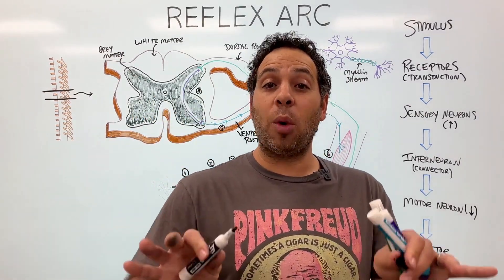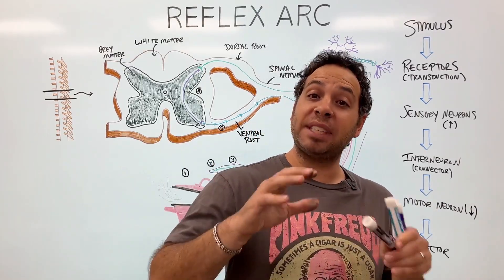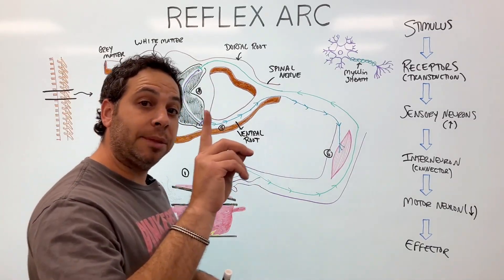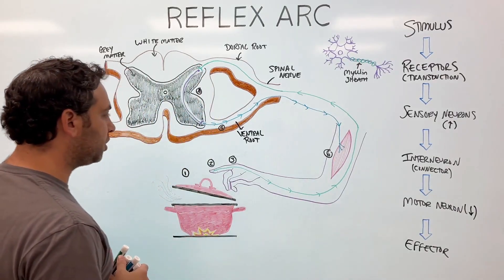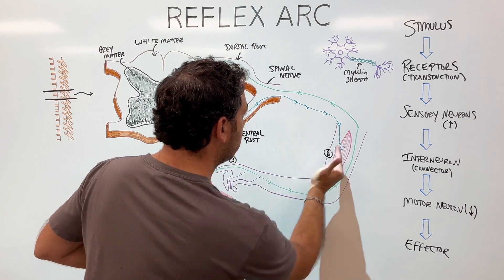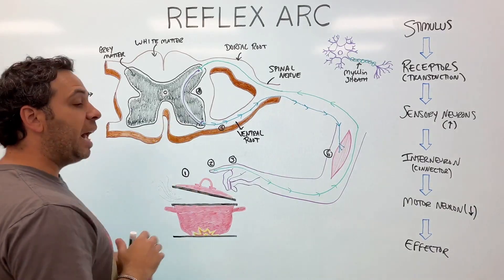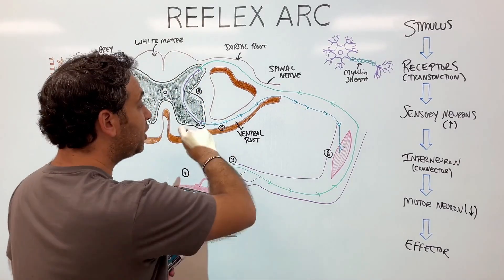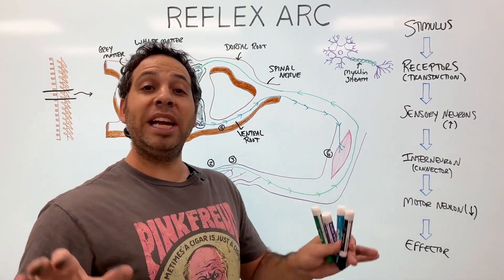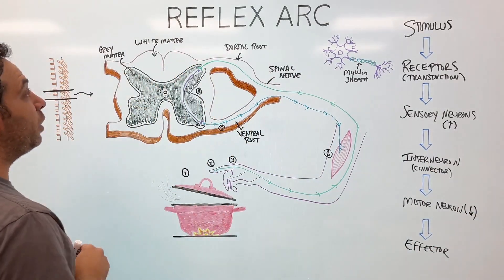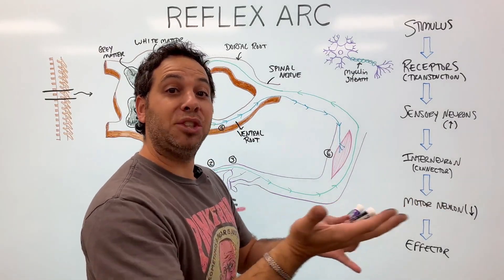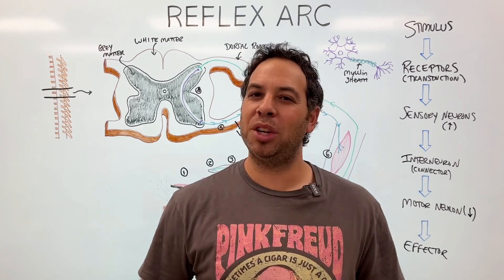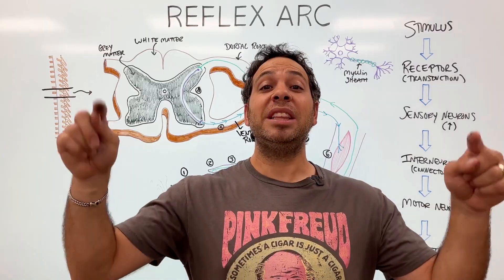Here's the cool part — your brain does not even know what happened until after your hand moved, because we didn't have enough time to go to the brain. Let's recap the six steps: stimulus (hot stove); receptors where transduction occurs, converting information to electrical signals; sensory neuron traveling up toward the brain; spinal cord entry through the dorsal root where the interneuron makes a decision; motor neuron going back out the ventral root; and the effector muscle contracting to move away. And why do we call it the reflex arc? Reflex because the movement is involuntary, and arc because of the shape this pathway makes. Thanks for watching!